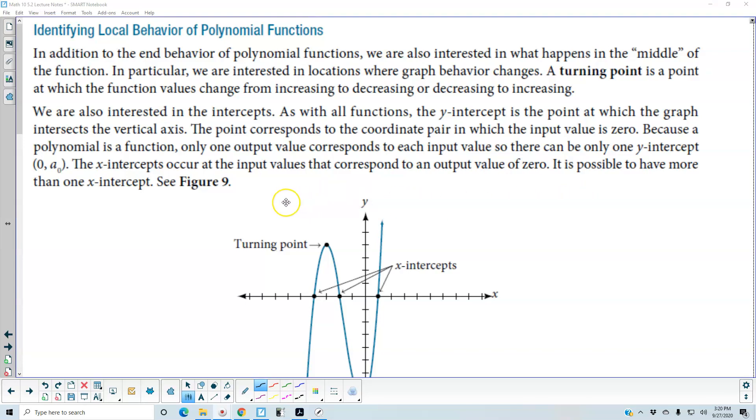Because a polynomial is a function, only one output value corresponds to each input value, so there can be only one y-intercept.